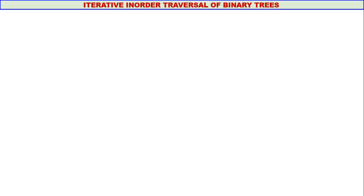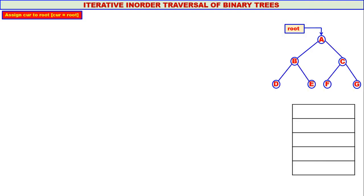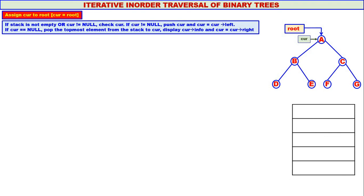Now we consider a bigger tree. A is the root of the tree. This is our stack. Assign curry to root, so curry will contain the address of root node A. Stack is not empty or curry is not equal to null — stack is empty but curry is not equal to null. Therefore, check curry. If curry is not equal to null, push curry — address of node A is pushed on the stack — and curry moves to the left. Since the left child of A is B, curry comes to B.